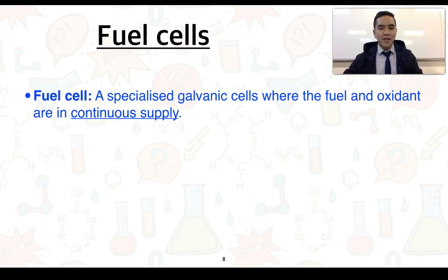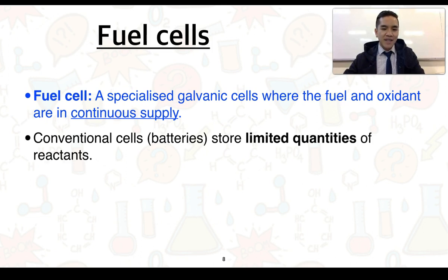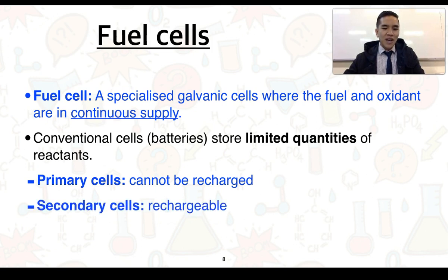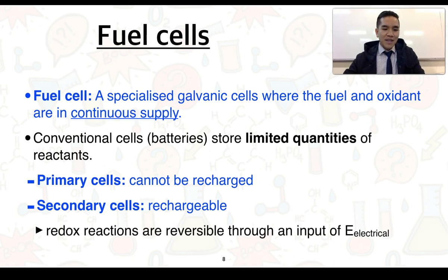From that, now we can talk about fuel cells. Fuel cells are essentially specialized galvanic cells where the fuel and oxidant are in continuous supply. That's different to a conventional galvanic cell or battery, which store only limited quantities of reactants. We can break this up into two types. We can call them primary cells. These ones can't be recharged, so these are your one-time use batteries. Or they could be secondary cells, which are your rechargeable batteries. What that means is that we can reverse their redox reactions by providing electrical energy, so we can charge up our batteries by connecting it to an external power source.